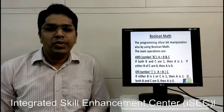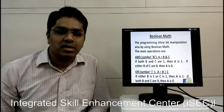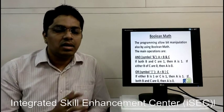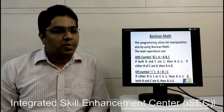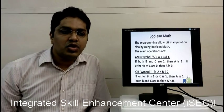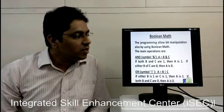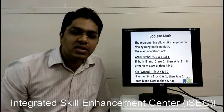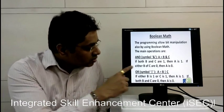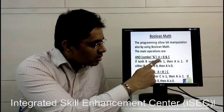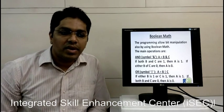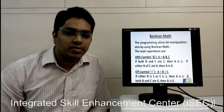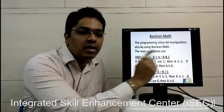The boolean math, AND and OR, is a basic thing. This can also be formed through the ladder programming language in the PLC. The programming allows bit manipulation by using boolean math. The main operation, one is AND, symbol AND. It means A equals B and C. If both B and C are 1, then A is 1. If either B or C are 0, then A is 0. A is output and B and C are input.